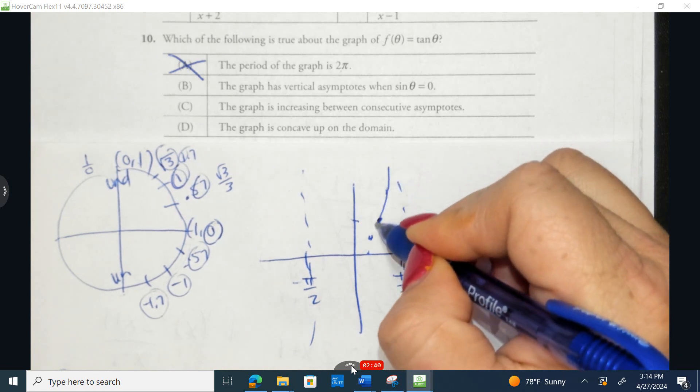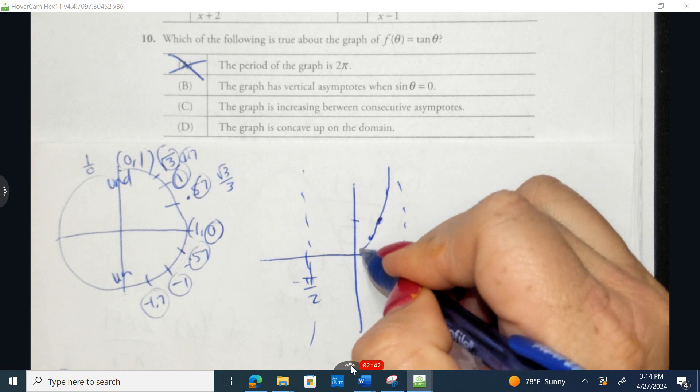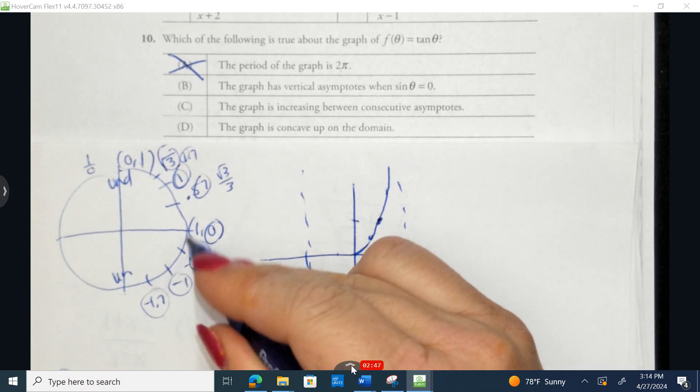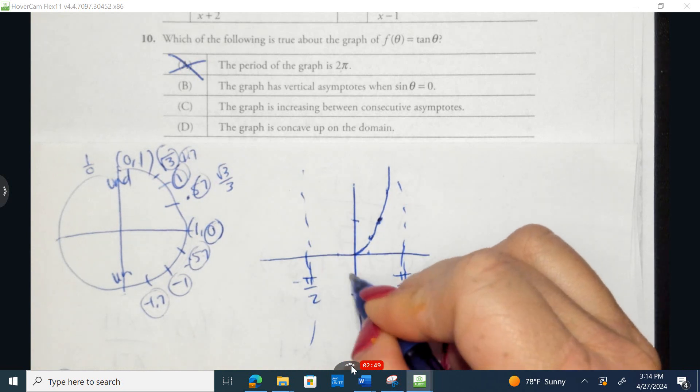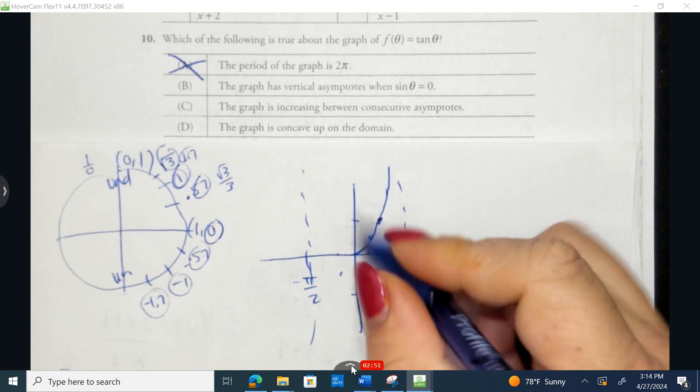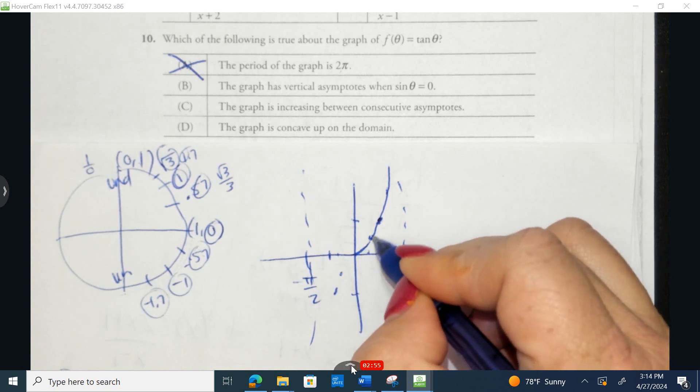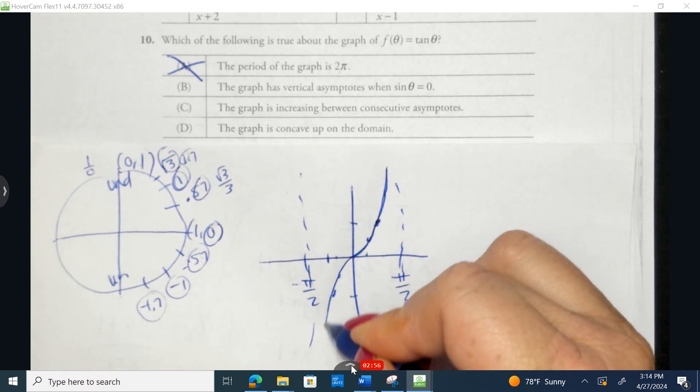Now at 0, it's at 0, and now it does the exact same thing but opposite. At negative 30 degrees, I'd be at a negative 0.57. At negative 45 degrees, I'd be at a negative 1, and you can see it just comes in like this.